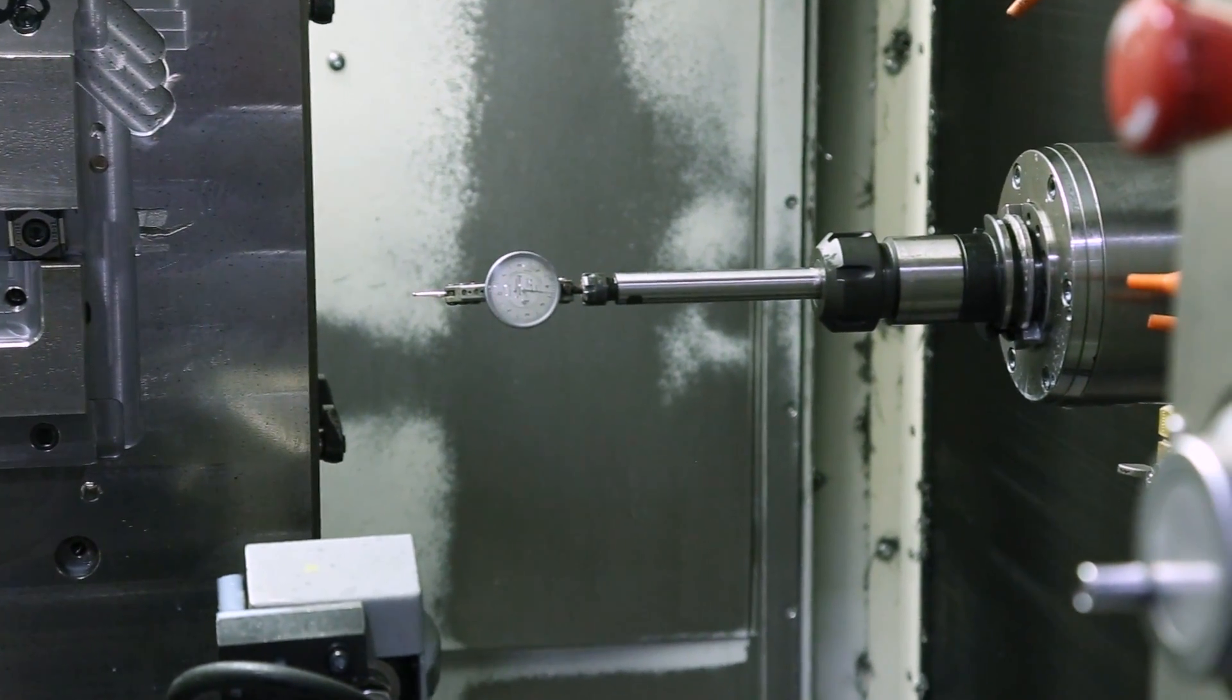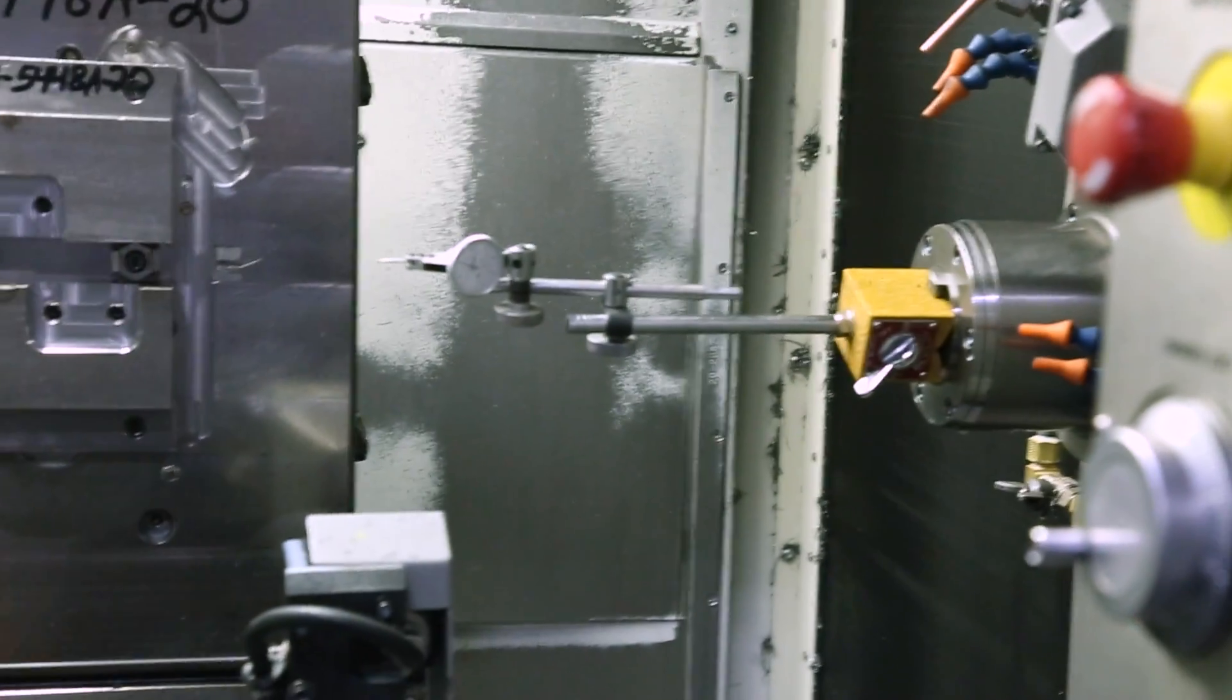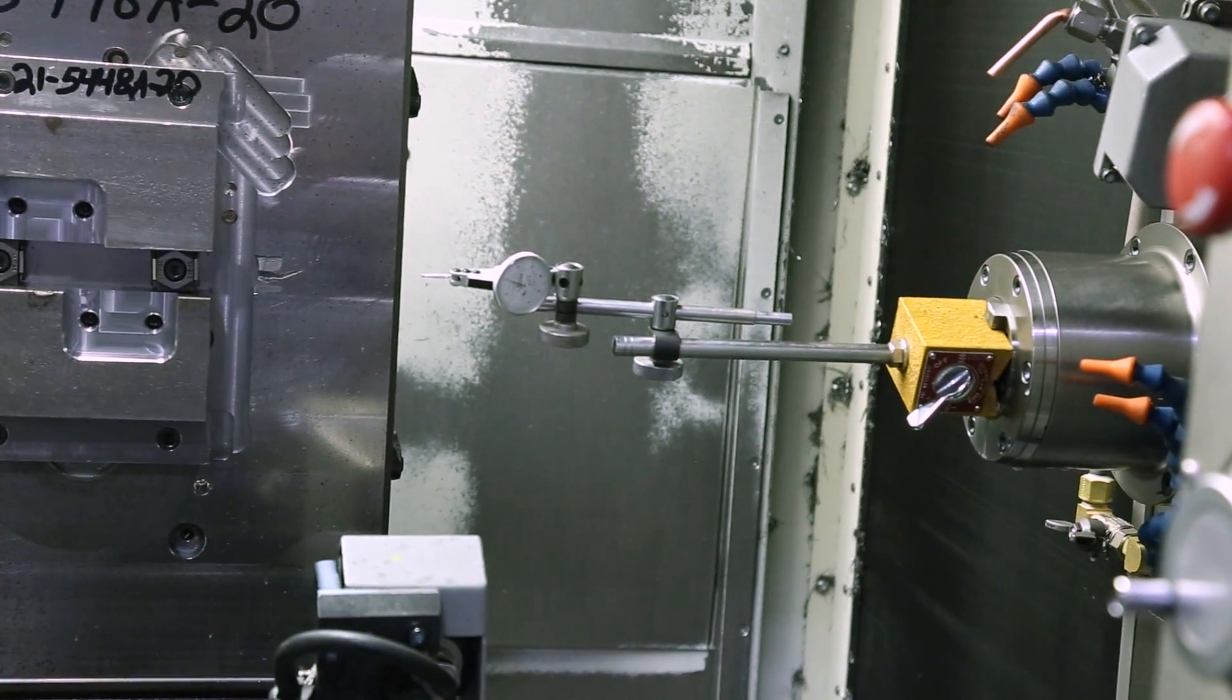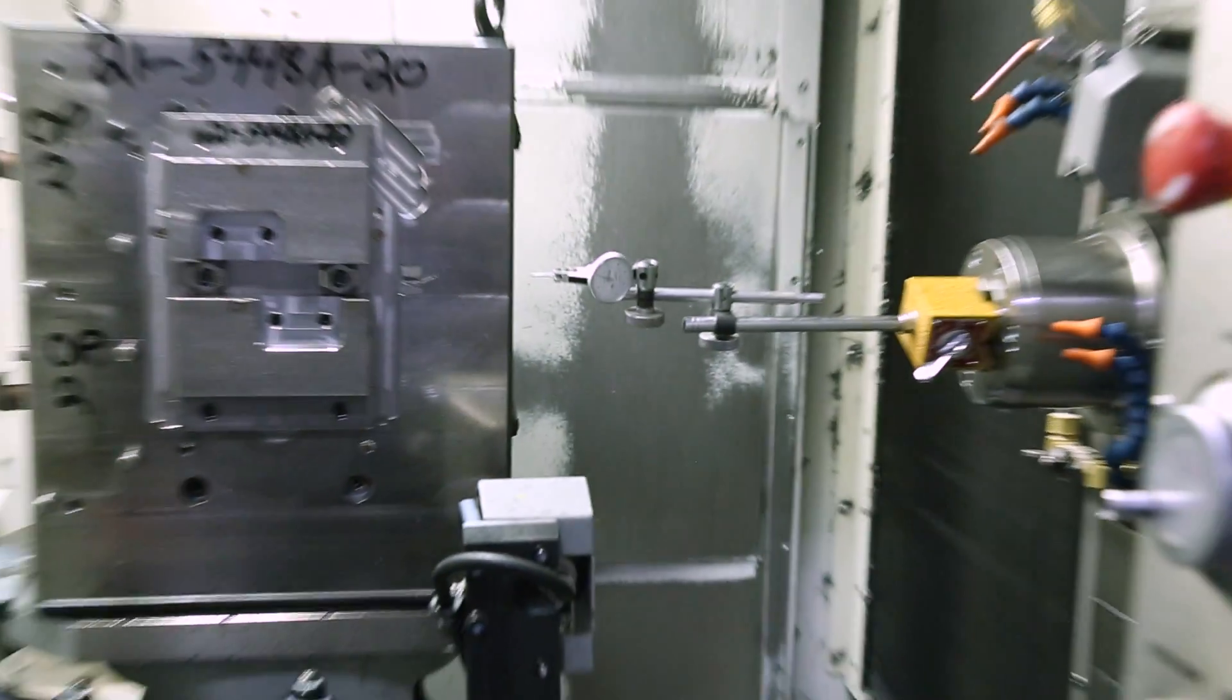Check out the ER collet extension. Now that we've shown you how a bad setup can droop, and we've shown you two good ways to do the job, you understand that you should never use a setup like this on a horizontal mill or a lathe. Thanks for watching!